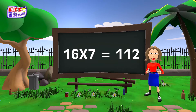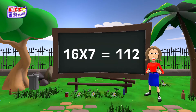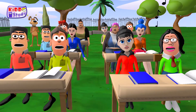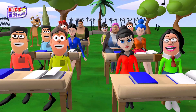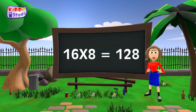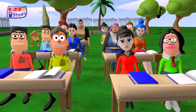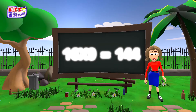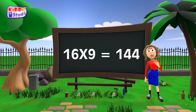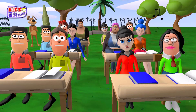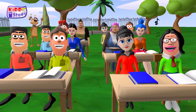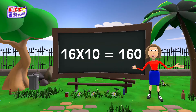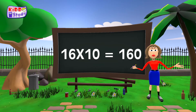Sixteen sevens are one hundred twelve, sixteen sevens are one hundred twelve. Sixteen eights are one twenty-eight, sixteen eights are one twenty-eight. Sixteen nines are one forty-four, sixteen nines are one forty-four. Sixteen tens are one sixty.